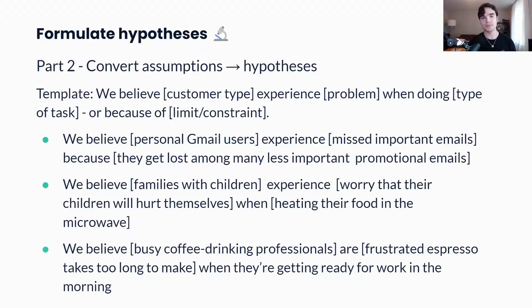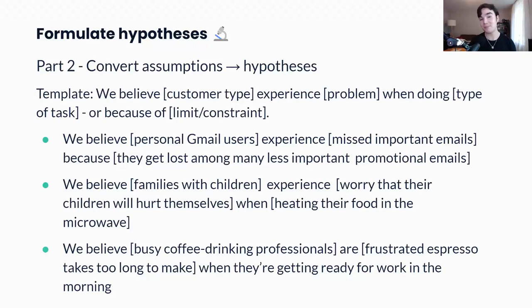Here are a few examples. We believe personal Gmail users experience missed important emails because they get lost among many less important promotional emails — this might have been the problem hypothesis behind Gmail's smart separation of primary inbox from updates and promotions. We believe families with children experience worry that their children will hurt themselves when heating food in the microwave. And we believe busy espresso-drinking professionals are frustrated that espresso takes too long to make when they're trying to get ready in the morning — have you ever heard of a Nespresso machine?